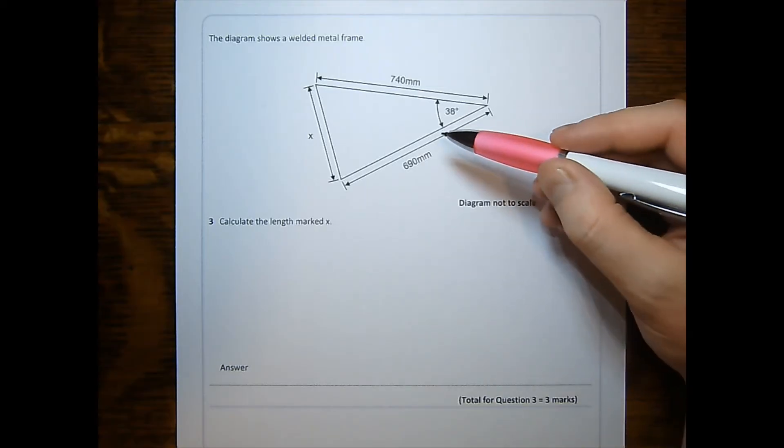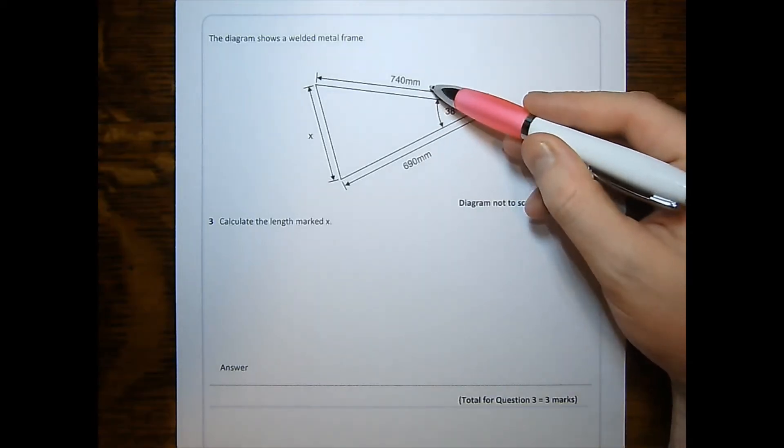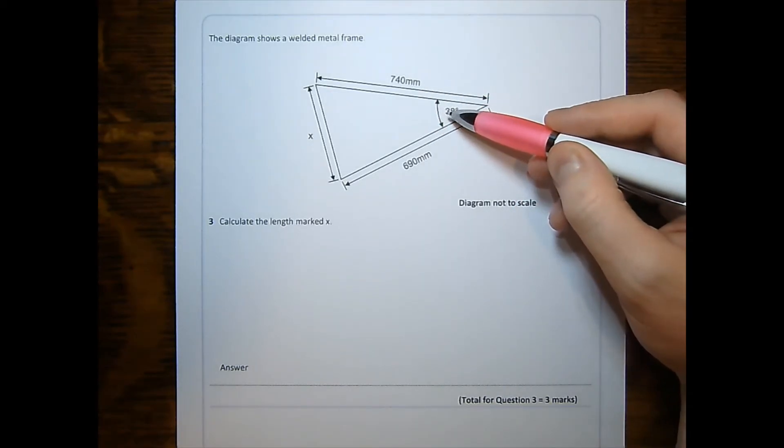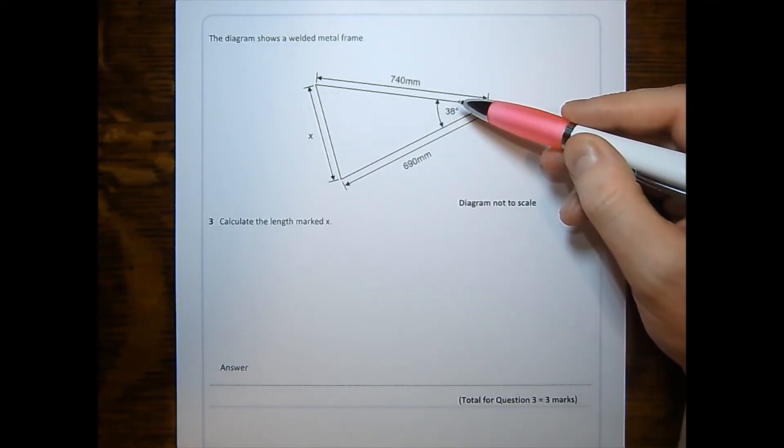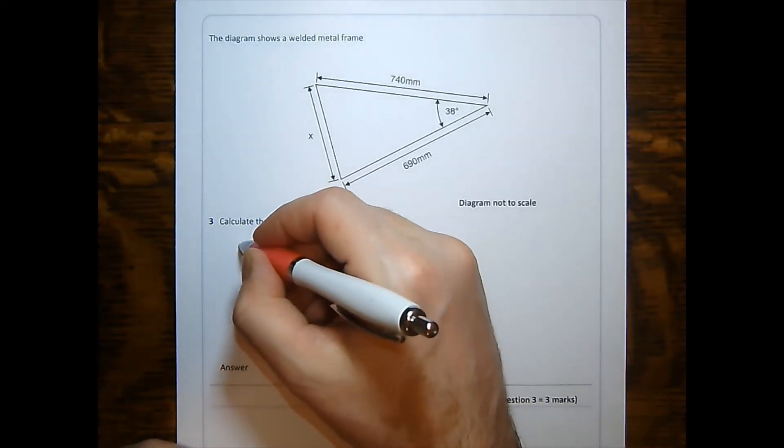In question three, we see that we have an angle between two sides. It's the included angle, and that tells me that we will be using the cosine rule. We will need to use this version.